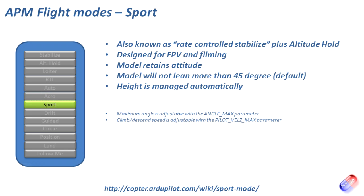Next is Sport mode, which is quite nice for filming and FPV. It retains the craft's attitude, so like doing a dolly shot you can set the model moving and it will continue moving in that direction. The maximum lean angle is 45 degrees, which controls maximum speed, and height is managed automatically using Altitude Hold features. If you want to take a video down a field and just set the model off on its own, this is a great way to do it.